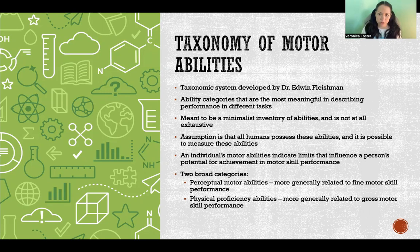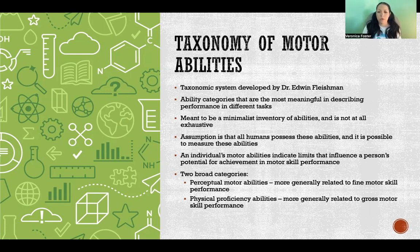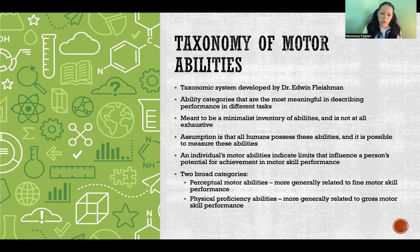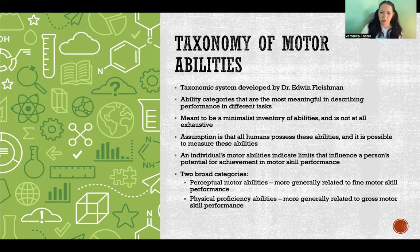In this taxonomy, abilities are broken into two broad categories: perceptual motor abilities and physical proficiency abilities. Perceptual motor abilities are more cognitive — decision making, nervous system type abilities — and are more generally related to fine motor performance. Physical proficiency abilities are more about the physical capability of the muscles, bones, and joints, and are more generally related to gross motor skill performance.